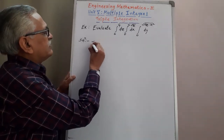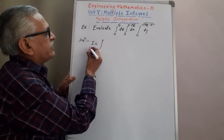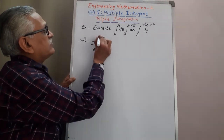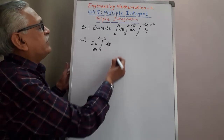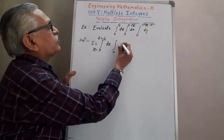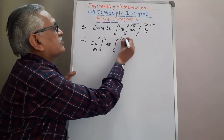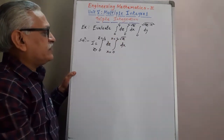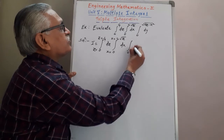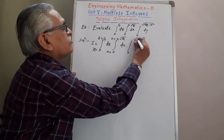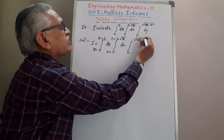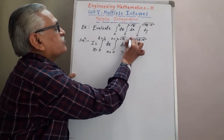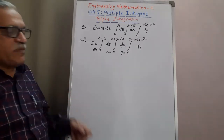Therefore, we write I as: integral from 0 to 4 with respect to Z — so this limit is for Z. Then integral from 0 to 2 root Z with respect to X — so the limit for X is 0 to 2 root Z. Then integral from 0 to root of (4Z minus X squared) with respect to Y — so the limit for Y is 0 to root of (4Z minus X squared).